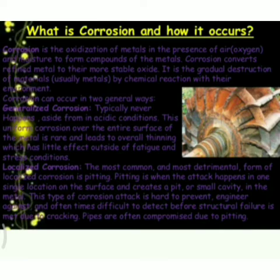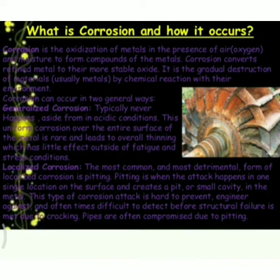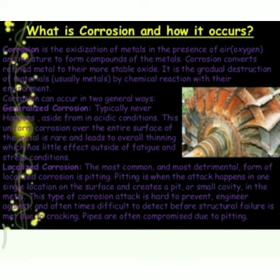Corrosion is the gradual destruction of metals, usually when there is a chemical reaction with their environment, resulting in destruction. The most common example of corrosion is rusting. Corrosion of iron is called rust — it is mainly hydrated ferric oxide. This happens when oxygen gas or water vapors in the presence of air attack the surface of iron, and this is called rusting of iron.